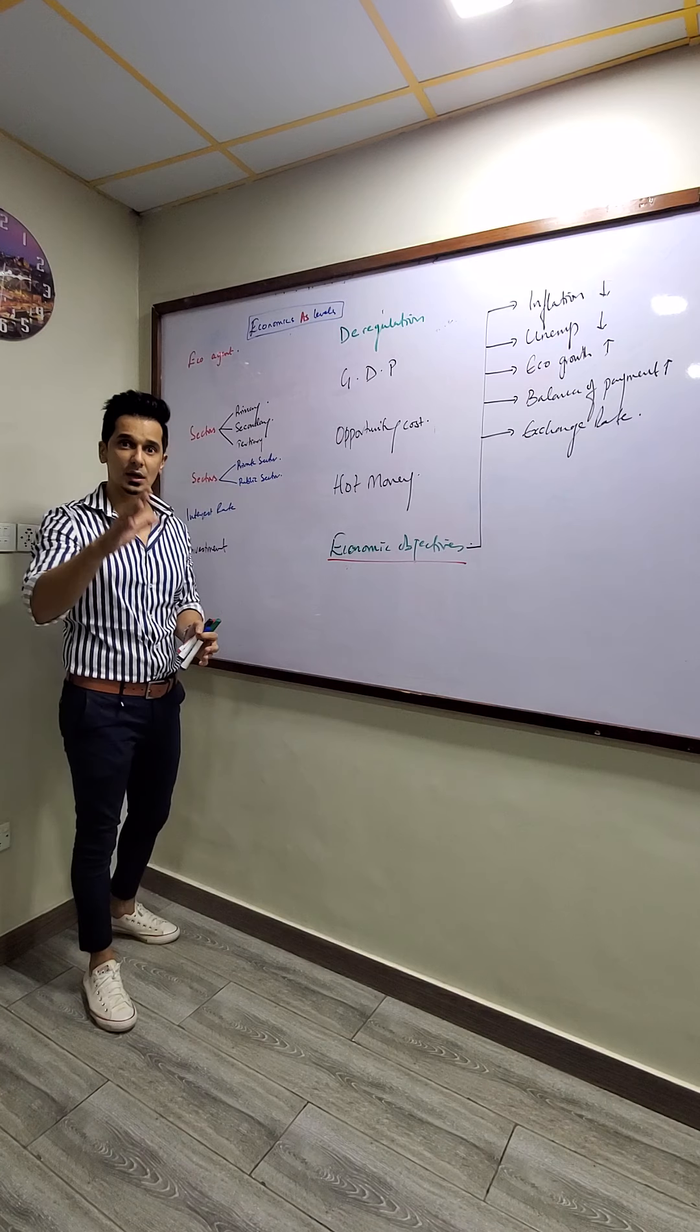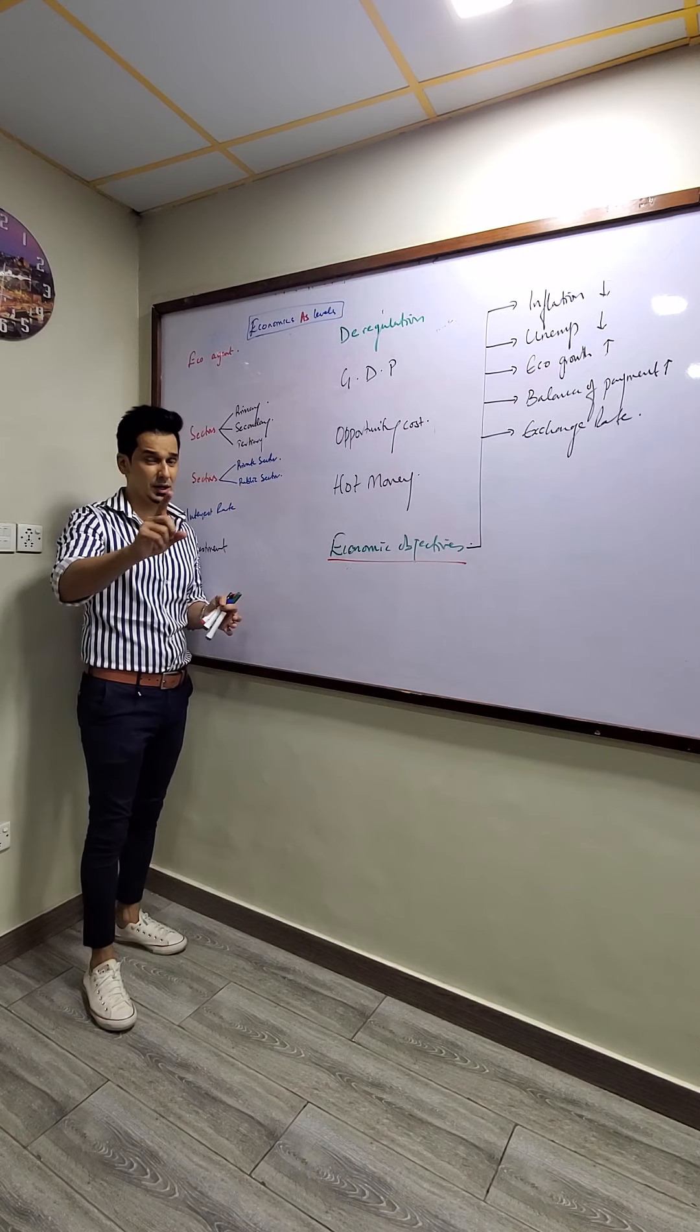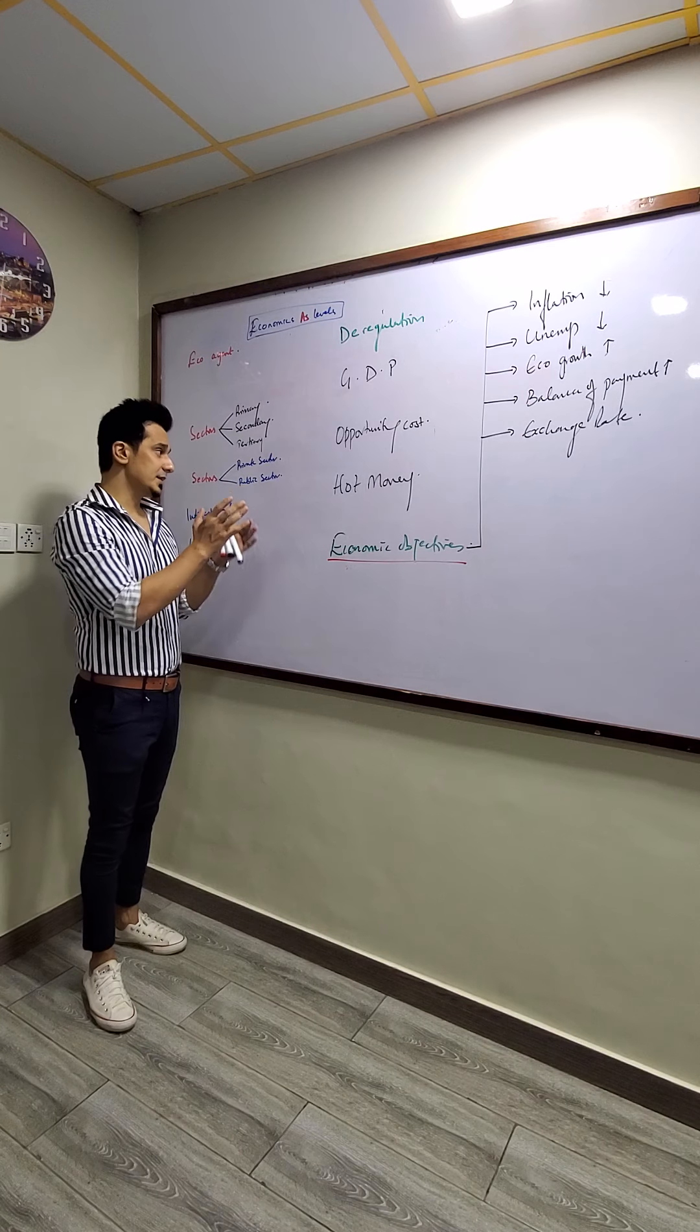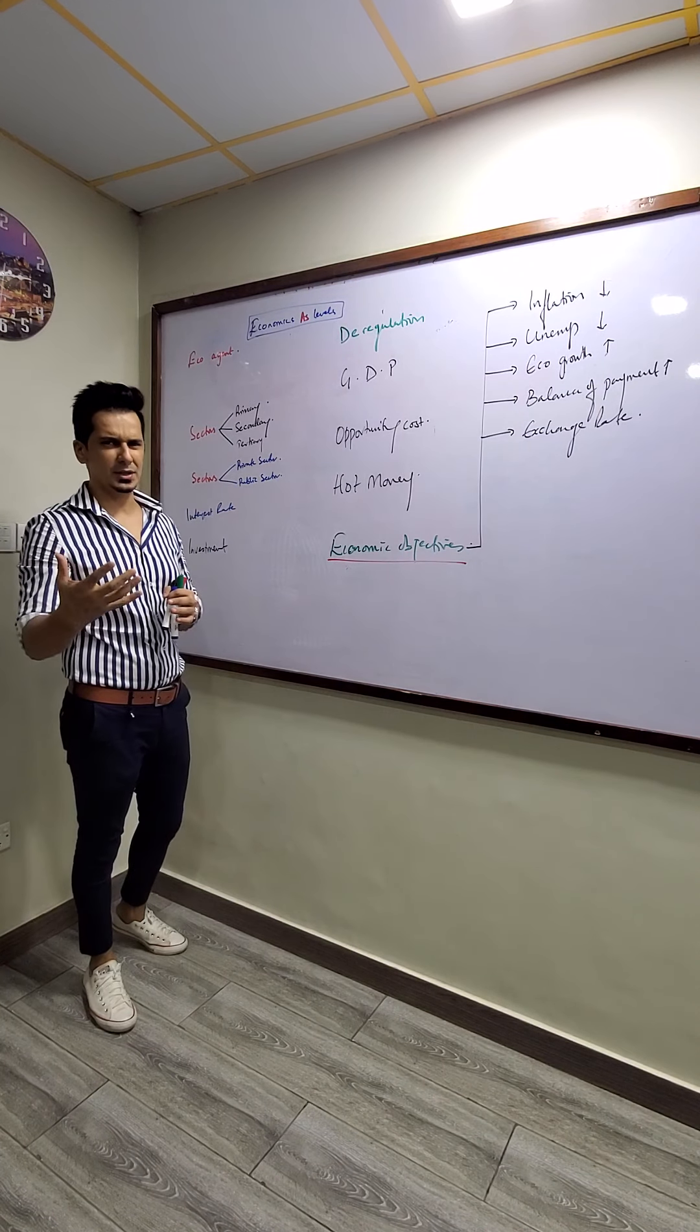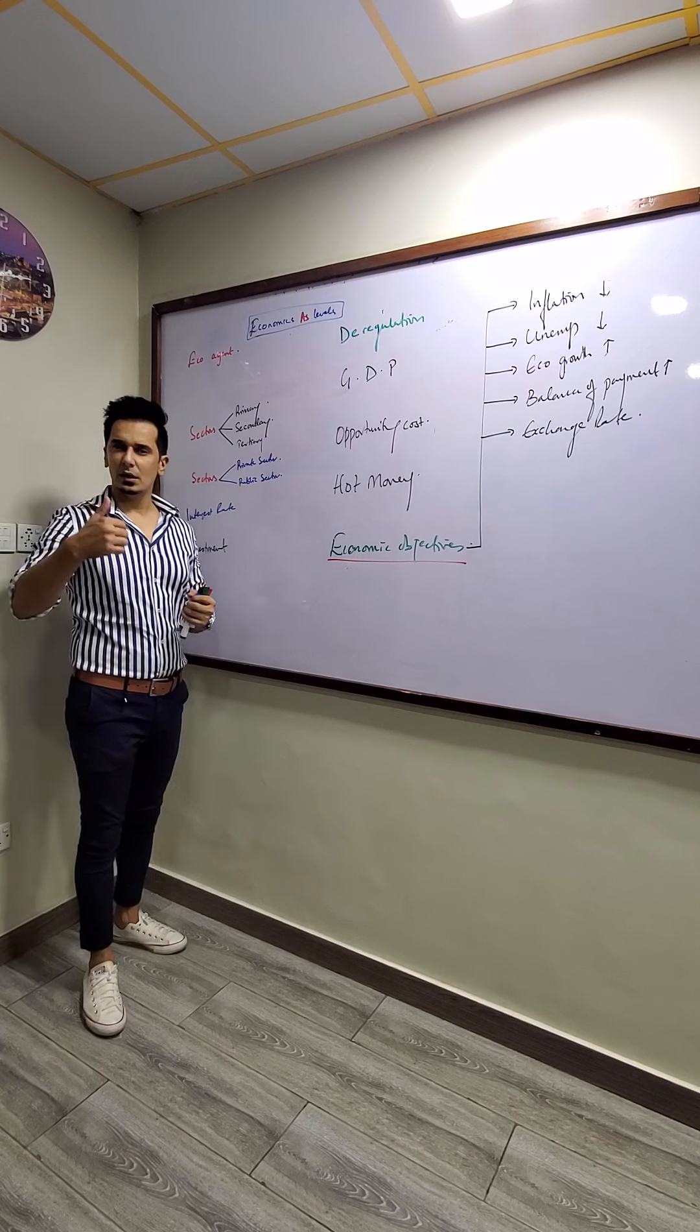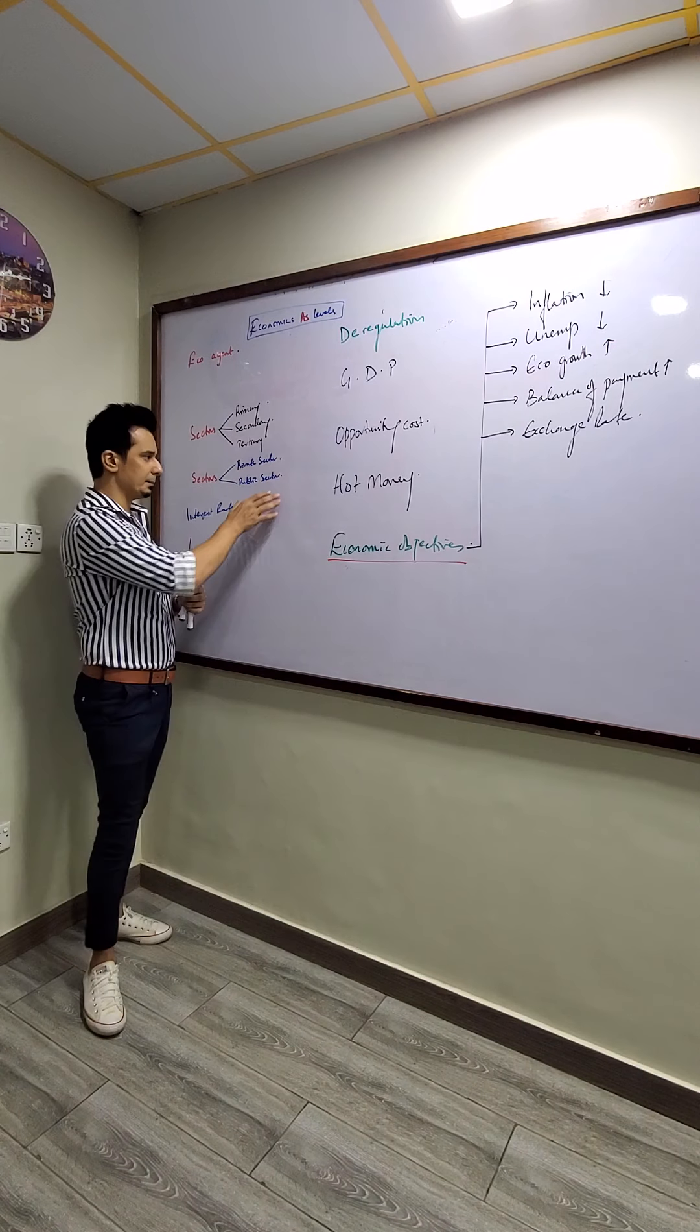Now we talk about the public sector. A public sector is a sector which is owned by the state or the government. Their main objective is to provide services and welfare of the people. And their secondary objective is to increase employment by using labor intensive methods. Examples of organizations in public sector: Pakistan Railway, Sui Gas.